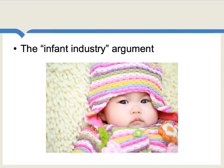A version of this argument is quite old and was discussed extensively at least as early as the 19th century. It was called the infant industry argument. The claim is that certain industries are in a sense like infants — they need to be fed, they need to be coddled, they need to be helped, and eventually they will grow up and be strong and healthy.